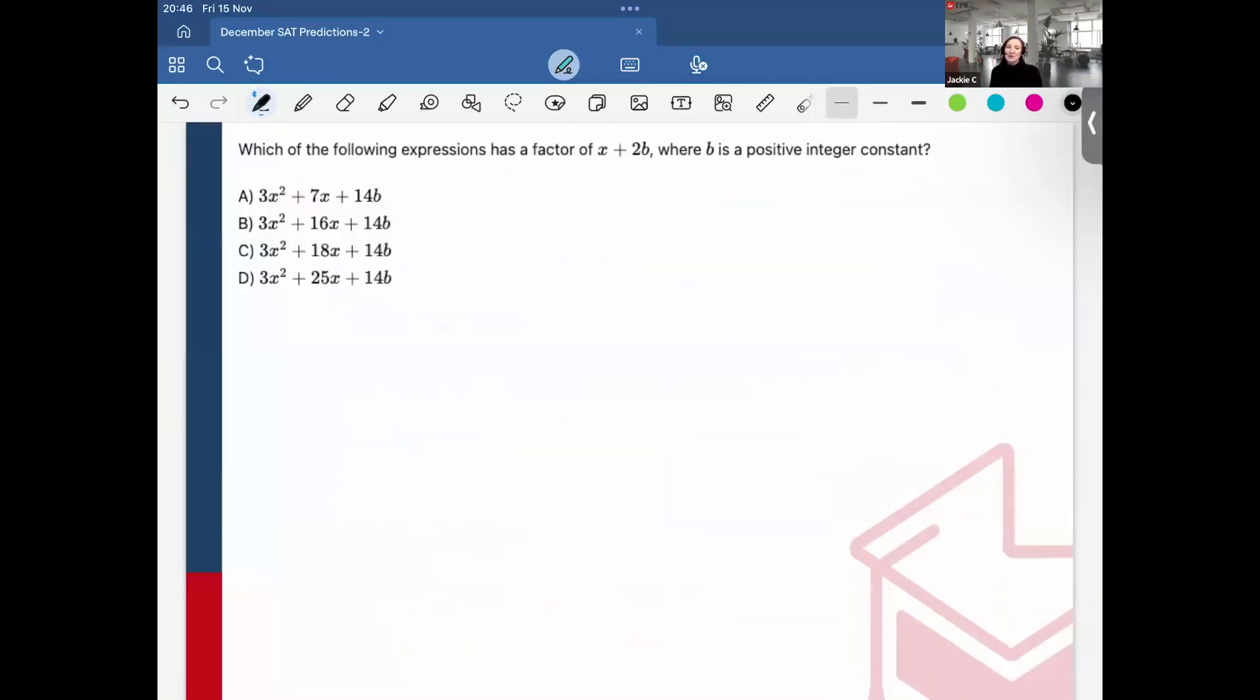Alright, now let's look at this one. This says which of the following expressions has a factor of x + 2b, where b is a positive integer constant. If you've been following my videos, I put this in my June predictions video. There was a similar one in October and ones in May. It could be possible they bring this up again on the December exam. The numbers may be changed, but same concept. Make sure you know this.